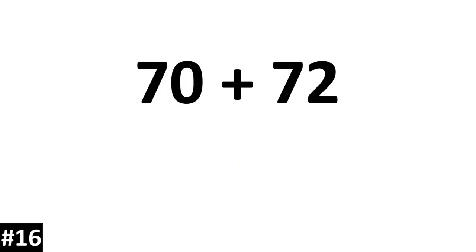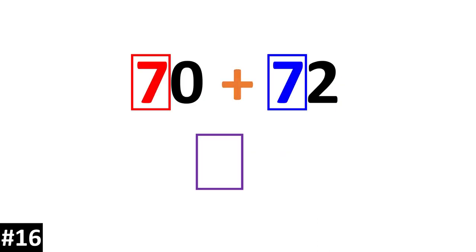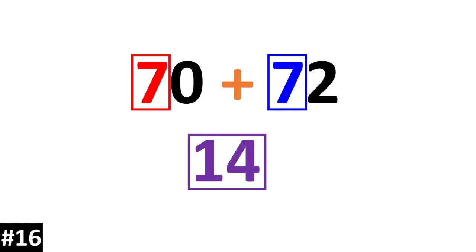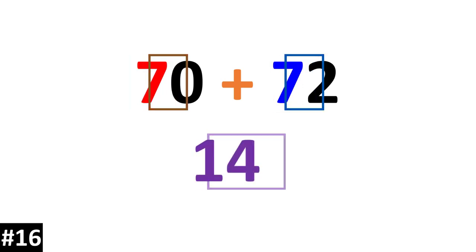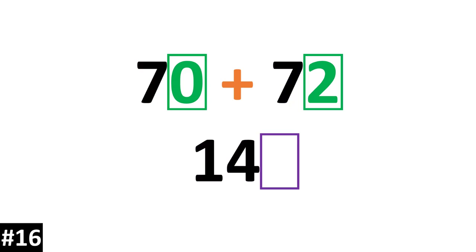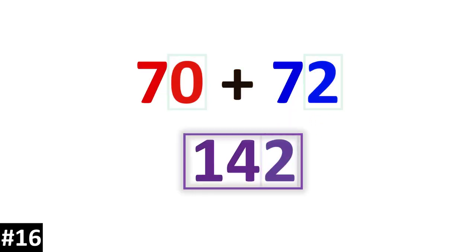70 plus 72. We have 7 tens plus 7 tens, which gives us 14 tens. Adding the ones: 2. The answer is 142.